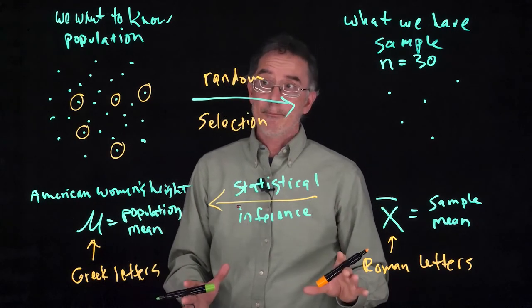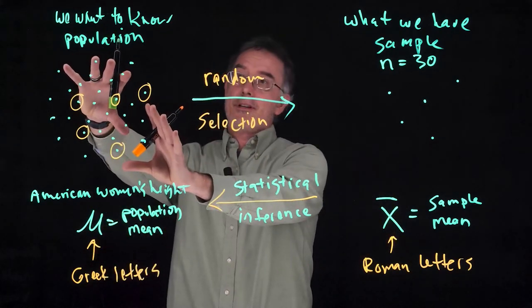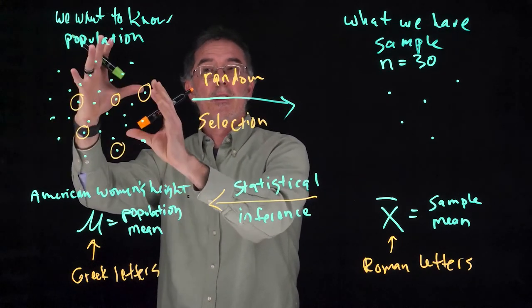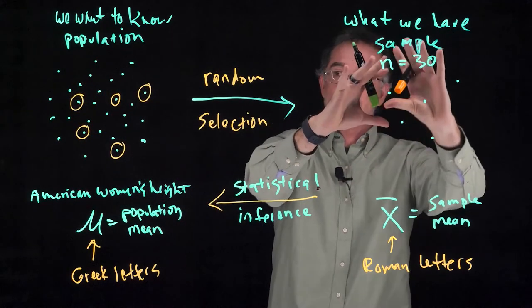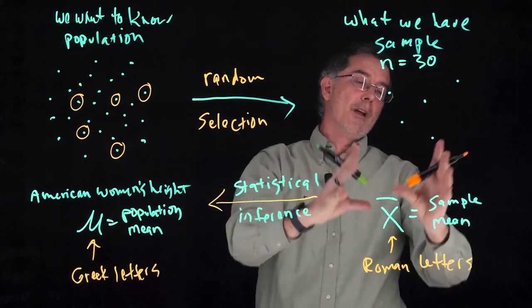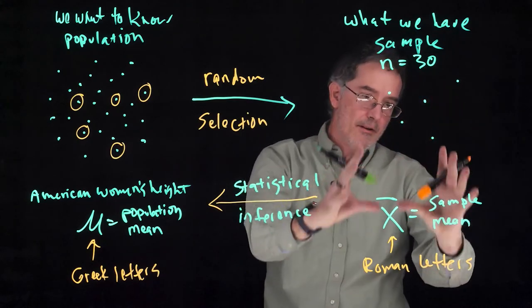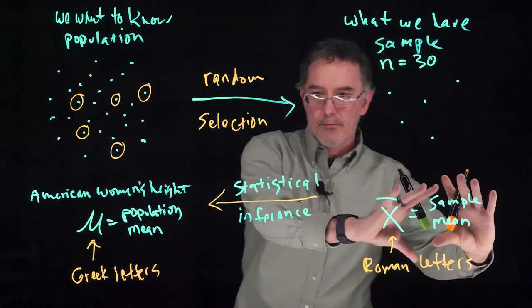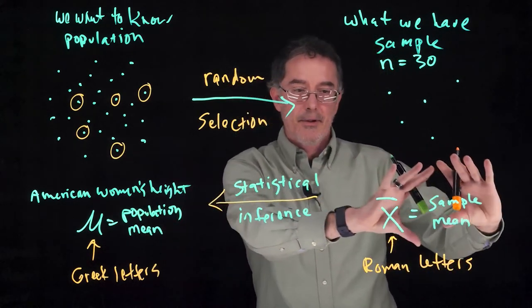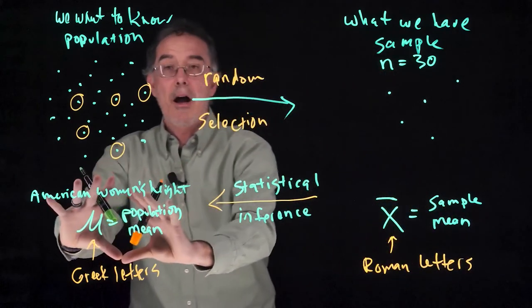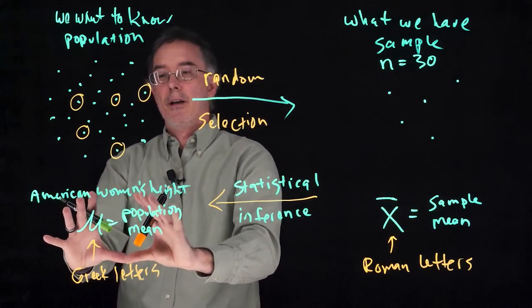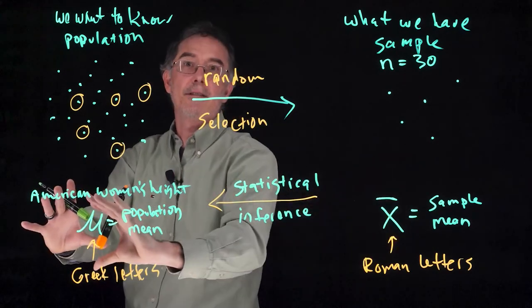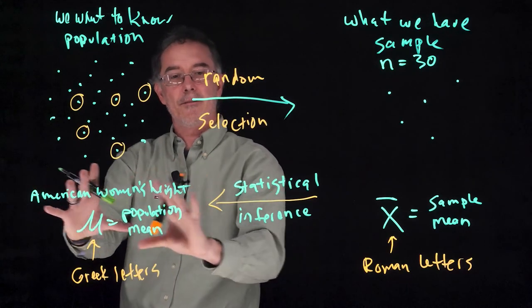To recap, researchers always want to know things about populations, but we almost never have access to everybody in a population. We can't do a census. We'll get a sample that's a subset of the population, and that's who's in our study. We'll measure those folks or do experiments with them. Then what we'll do is we'll use inferential statistical processes to make inferences from samples to populations. This is the stuff that you'll read about in the newspaper or in research articles as the result of this statistical inference process, which is really the main topic of this whole class.